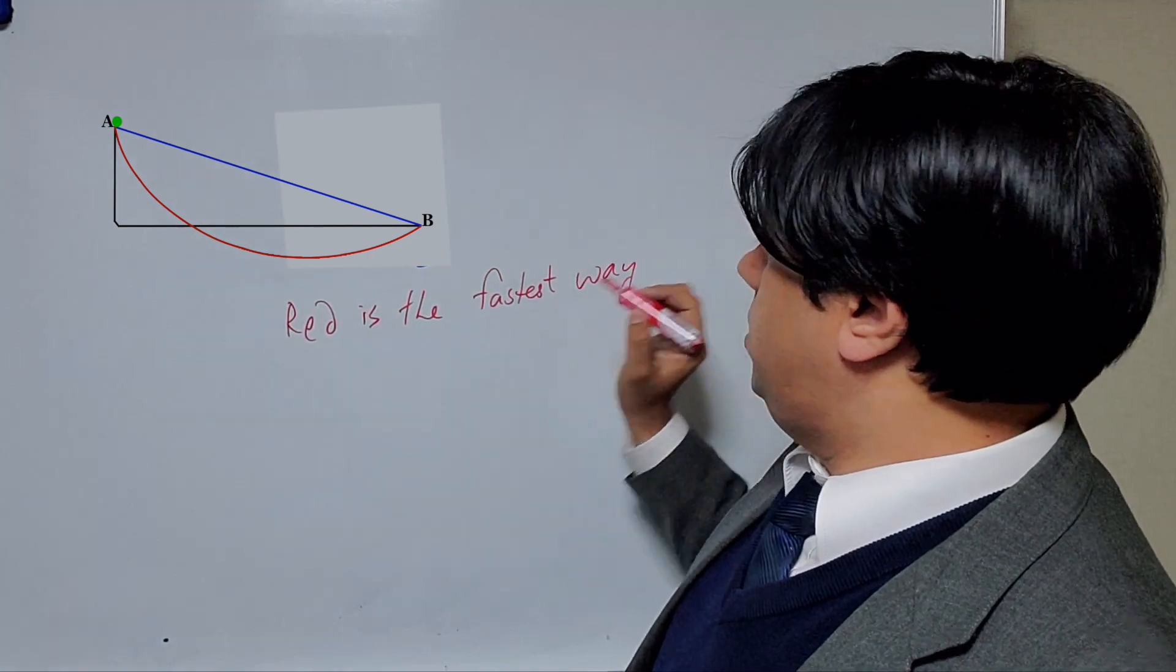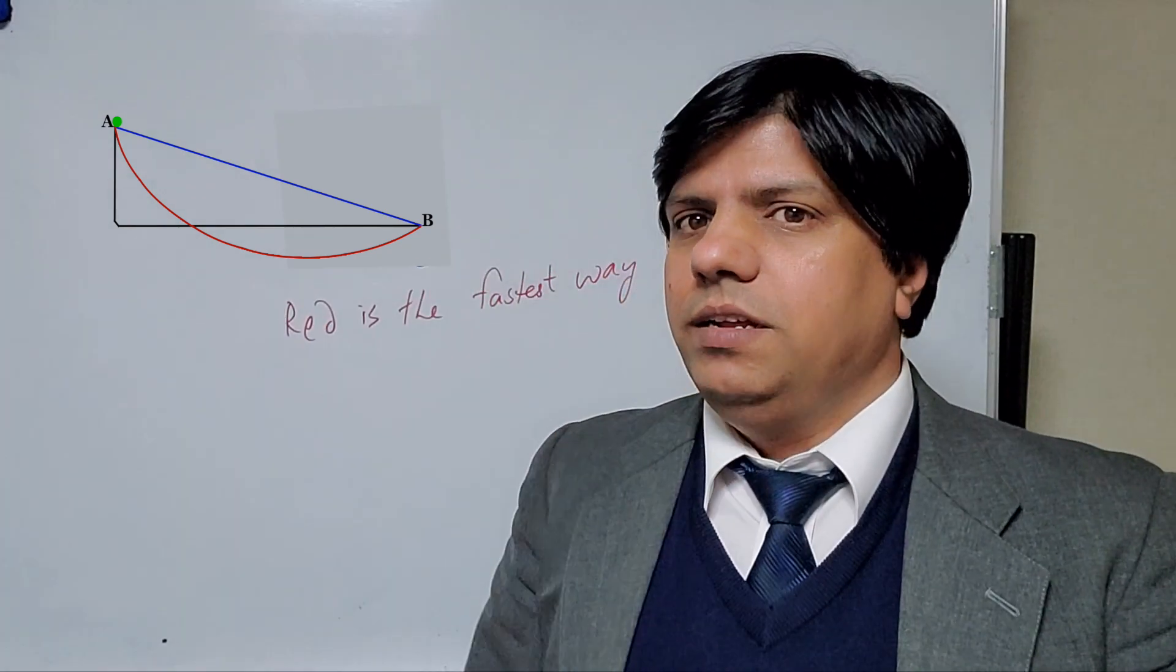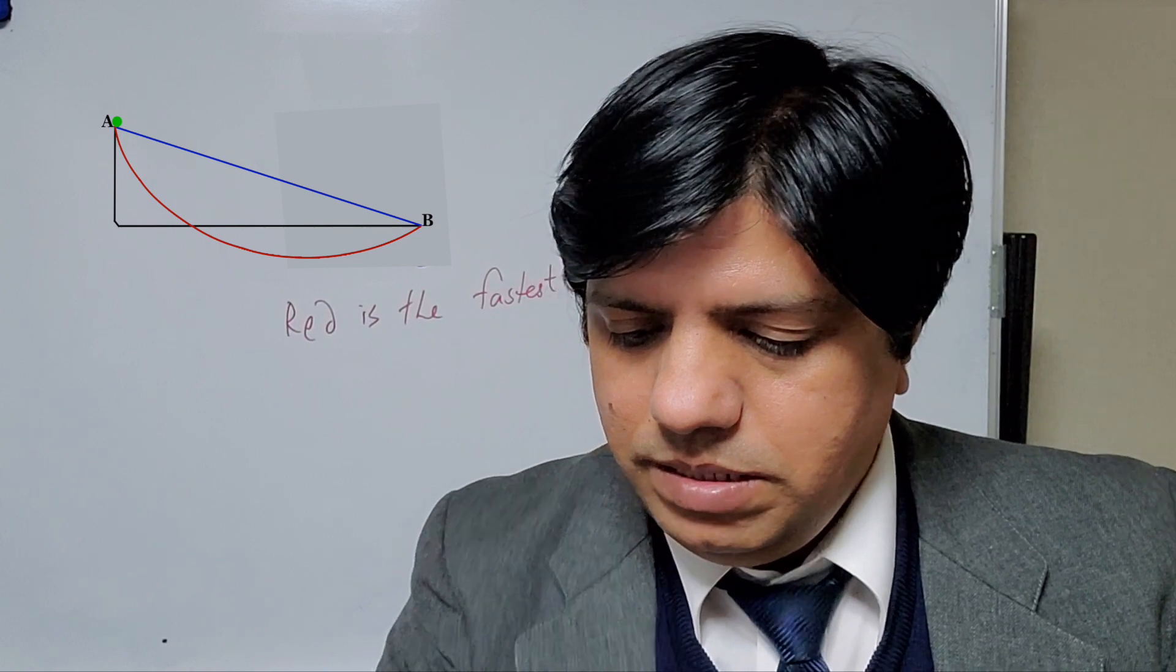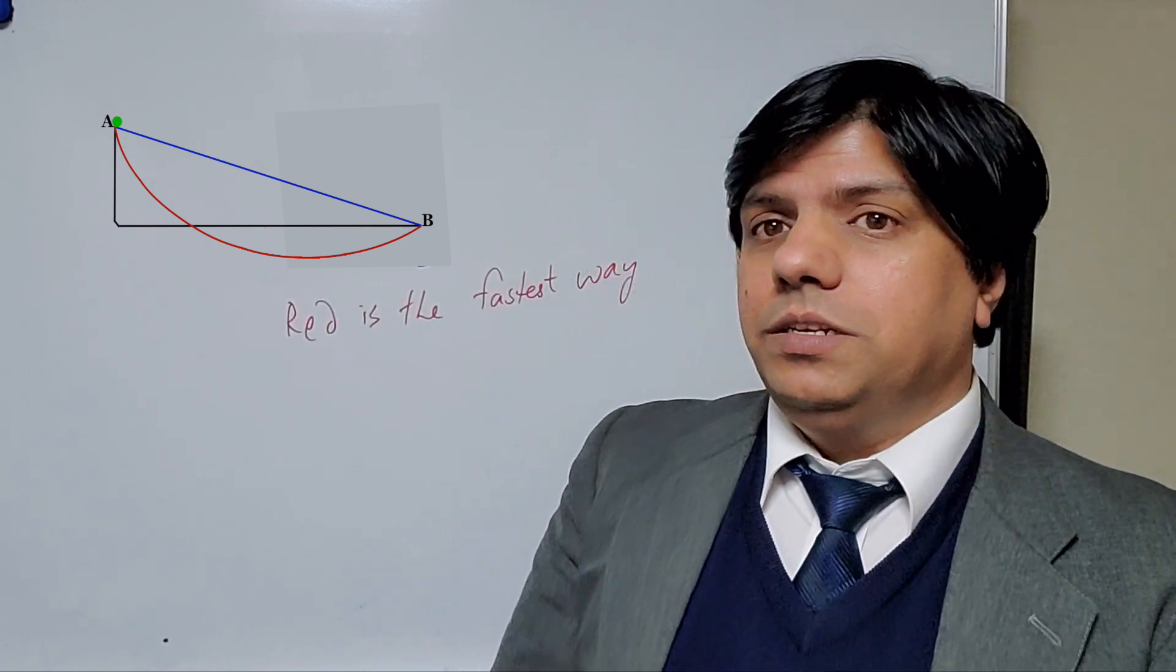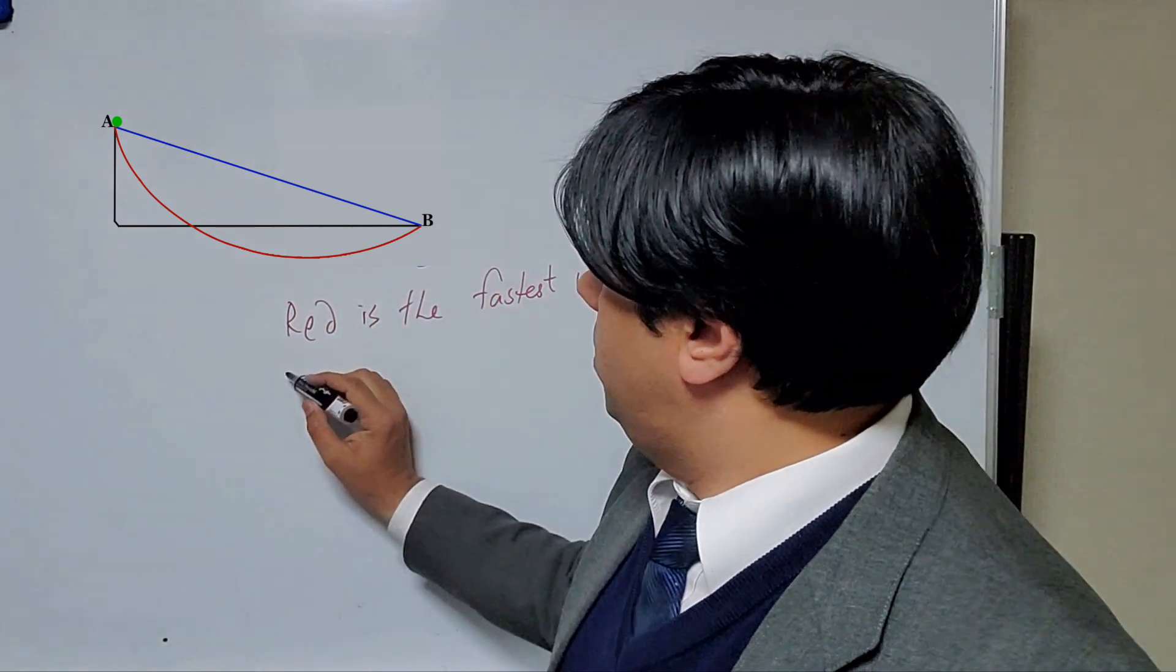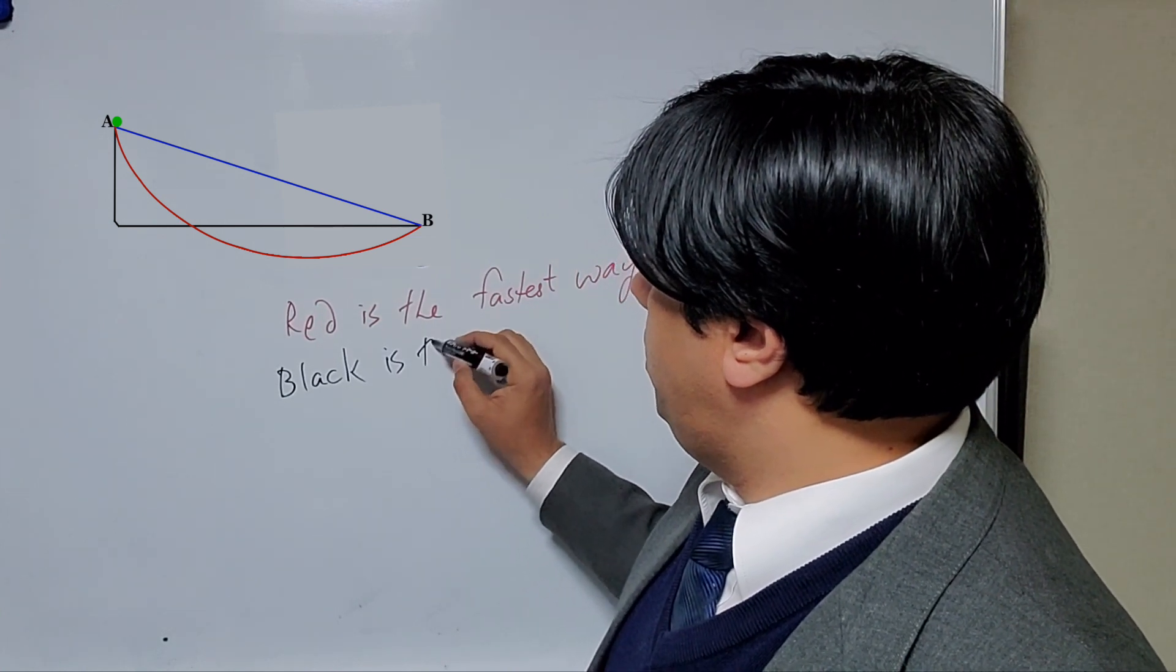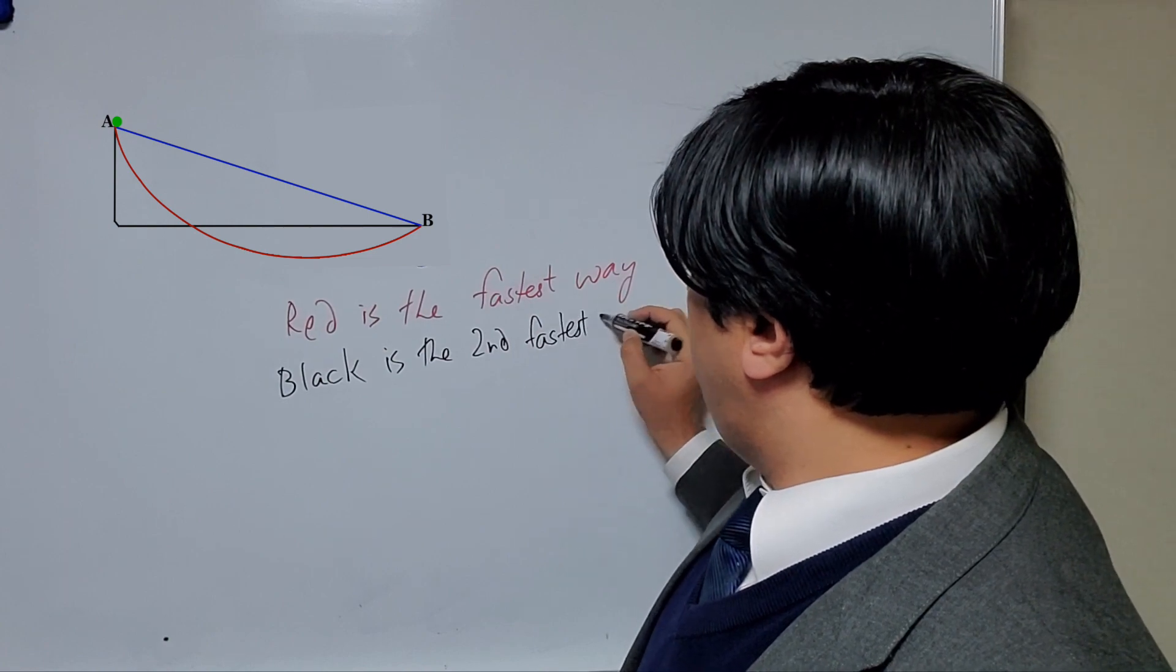Now, what do you think would be the second fastest way? The answer is, you would think it would be blue, but actually, the black line is the second fastest way.